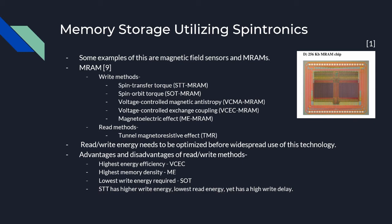The spin orbit torque, or SOT, is more energy efficient than the STT, as the charge current passes through an SOT channel. The voltage-controlled magnetic anisotropy method, or VCMA, uses pulse width control, making it more complex, harder to implement, and not as commonly used. The VCEC, or voltage-controlled exchange coupling method, utilizes bidirectional voltage control, where voltage is applied to two different sides of the device. The polarity of the voltage across the magnetic tunneling junction affects the magnetic direction, which determines either a 0 or a 1 in the RAM module.